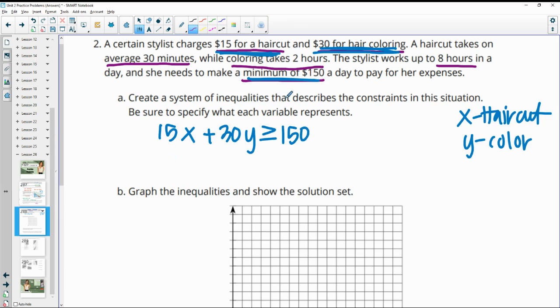So $15 for every haircut plus $30 for every hair color needs to give her at least or greater than or equal to $150. Then when we take the time that she's working, now notice that this is in hours and this says 30 minutes. So remember that 30 minutes is a half hour. Make sure that all of your units match. So every haircut is 0.5 hours plus your hair coloring is two hours per haircut. Or sorry, per hair color. And this needs to be less than or equal to her eight-hour workday.